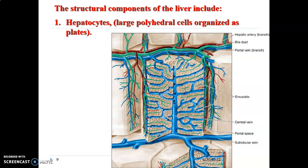Hepatocytes synthesize proteins, help with detoxification, production and metabolism of steroids and cholesterol. They will therefore have features of protein-synthesizing cells such as prominent nuclei, nucleoli, abundant ribosomes, rough endoplasmic reticulum, and Golgi apparatus. They also have features of a steroid-synthesizing cell, including smooth endoplasmic reticulum and abundant cytoplasmic vacuoles.